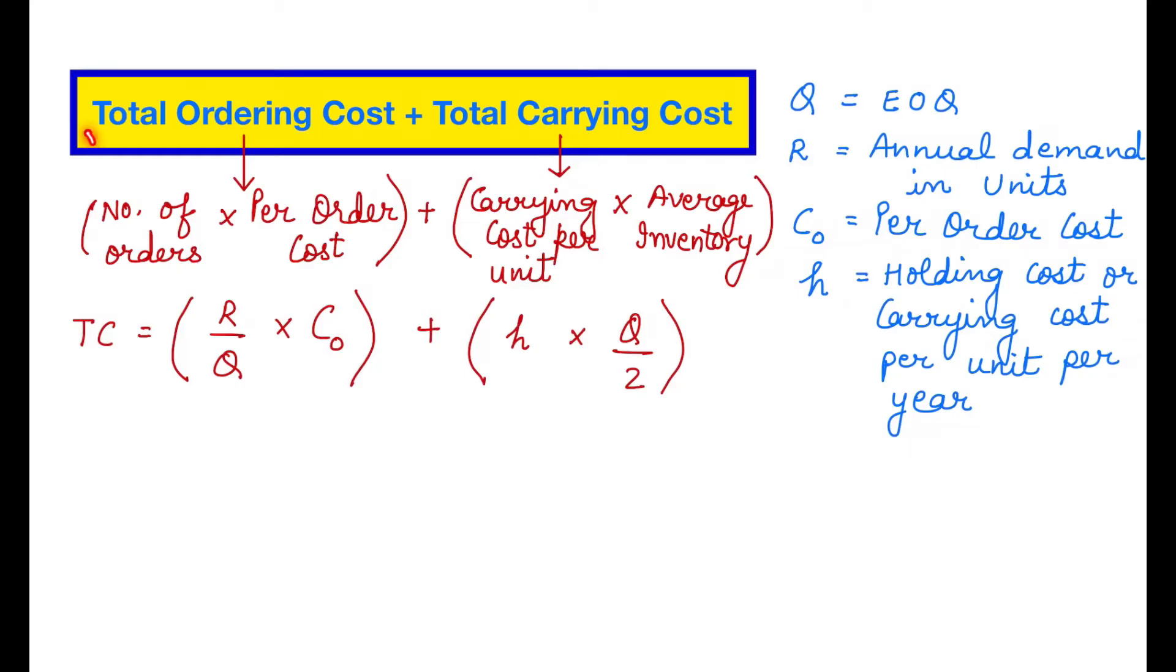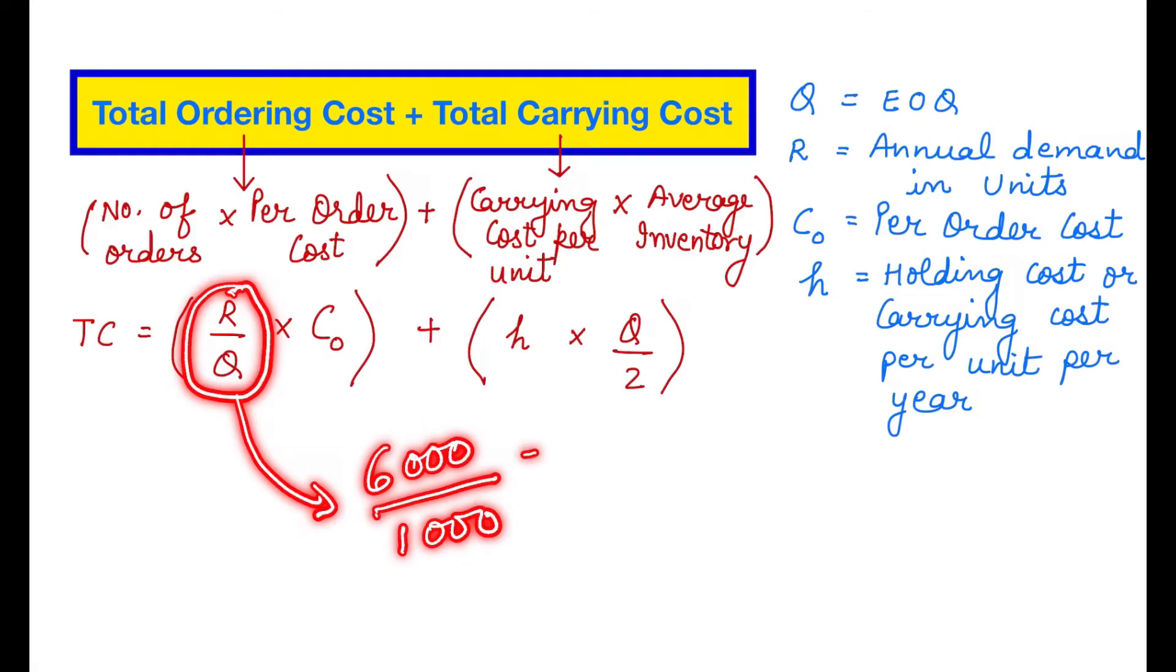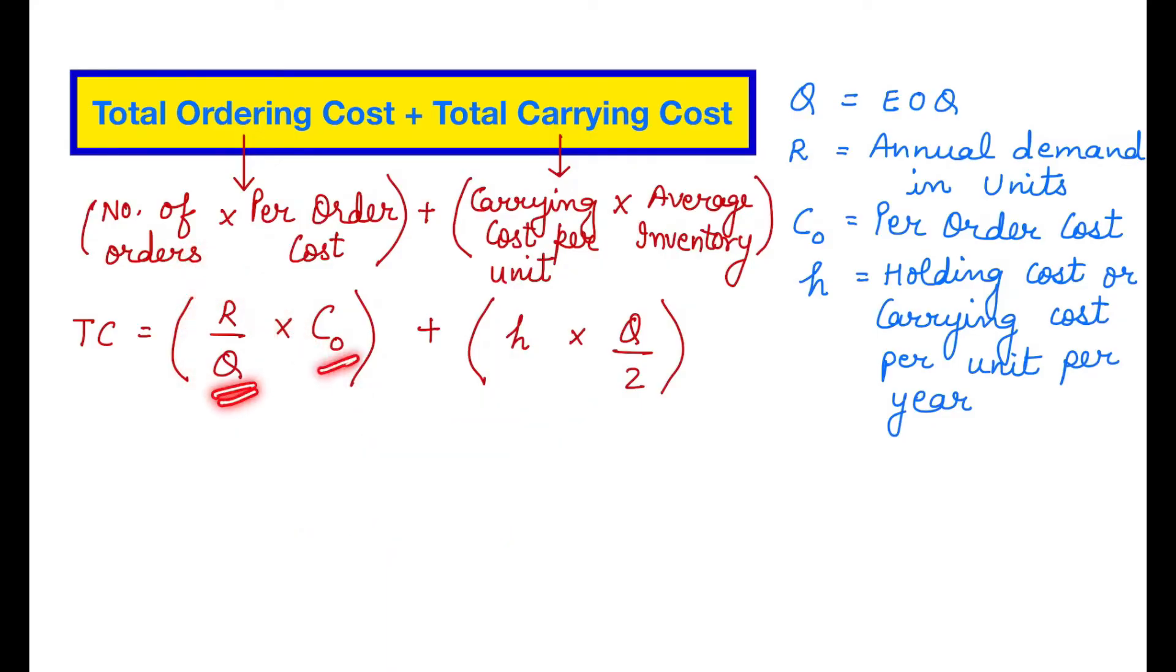Now calculating the total ordering cost. We can calculate the total ordering cost by the number of orders in a year multiplied by the per order cost. Number of orders can be determined by R divided by Q. The understanding is very simple. Suppose you require in the year total 6000 units and you order 1000 units at one time. So how many times you will have to place the order? Obviously six times. So this is the number of orders. The number of orders will be multiplied by per order cost and you will get the total ordering cost.